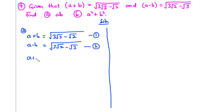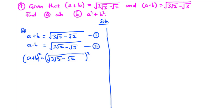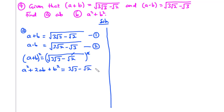From equation 1, a plus b equals the square root of 3 root 3 minus root 2. We are going to square both sides to do away with the square root. When we do that we have a squared plus 2ab plus b squared, and on the right hand side the square cancels the square root, leaving 3 root 3 minus root 2. Let's call this equation 3.